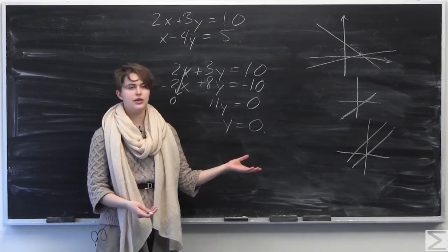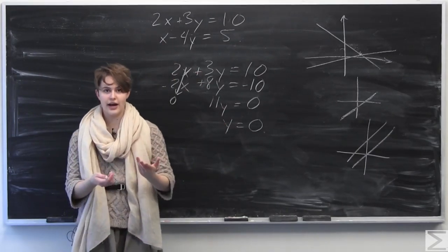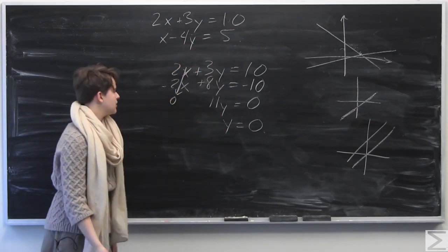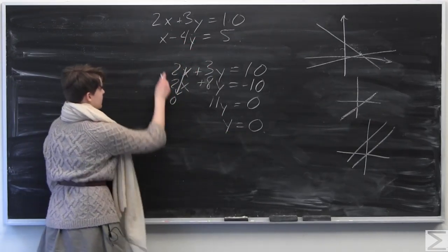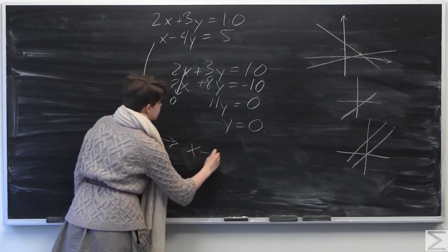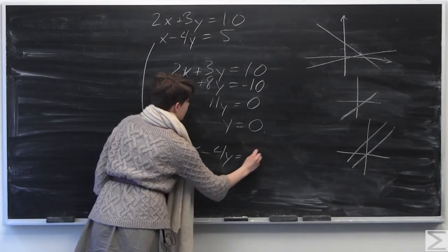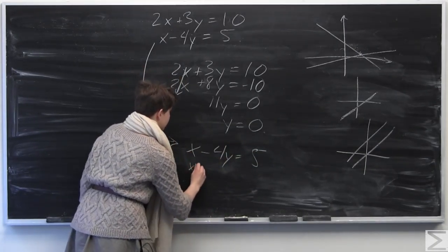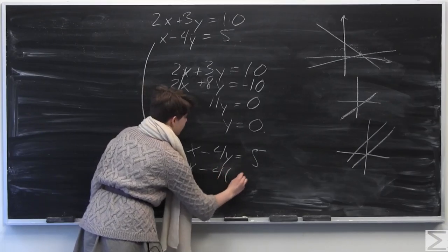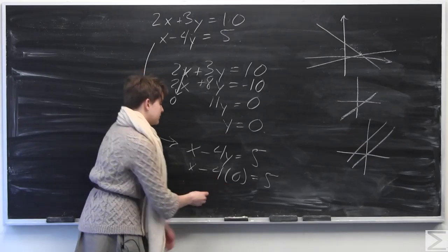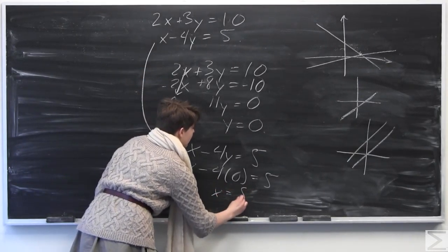OK, so now that we have our y, we can plug it into either of our two original equations to solve for x. So in this case, it looks like it might be easiest to plug it into the second equation here. So we now know that y equals 0. Just copying down this equation here. We know from the beginning that x minus 4y is equal to 5. But we know from here that y is equal to 0. So this is equal to x minus 4 times 0 is equal to 5. 4 times 0 is just 0. So this gives us down here x is equal to 5.